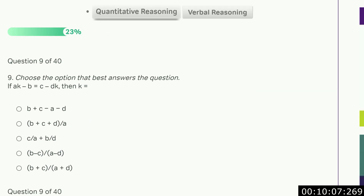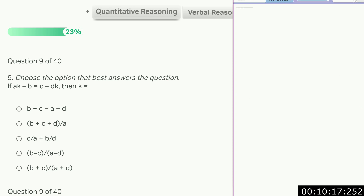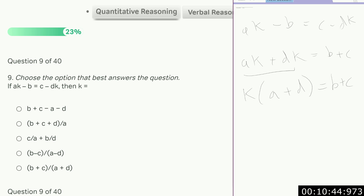Choose the option that best answers the question. If A(K minus B) equals C minus DK, then K equals what? It's a classic rearranging question. We want to isolate K, which means bringing all the Ks to one side. We bring the K terms together and push the B across. Now we factor out the K — that's the only way to isolate it — and then divide by the bracket. This gives us B plus C over A plus D, which is answer E.